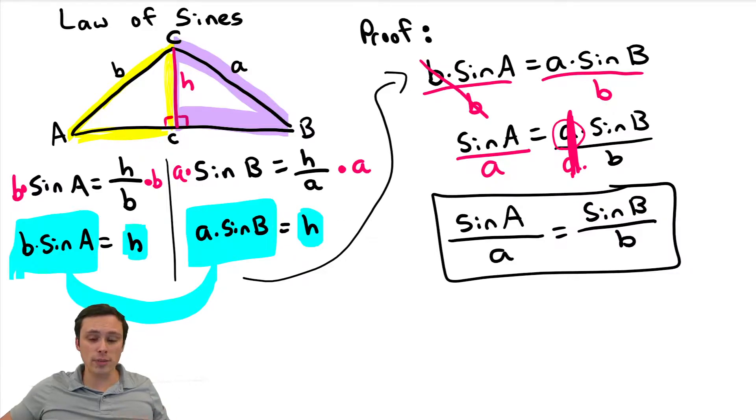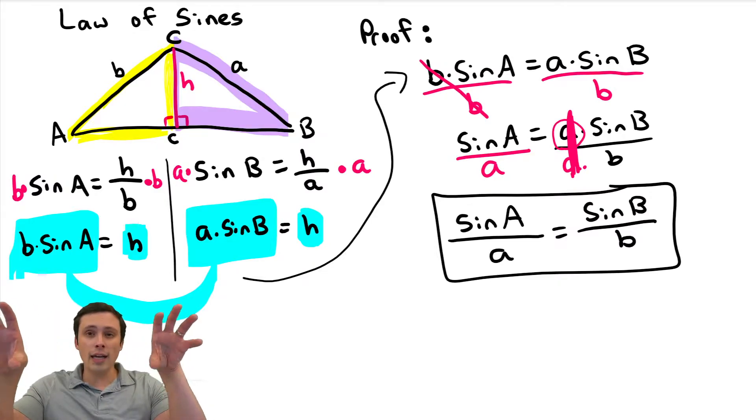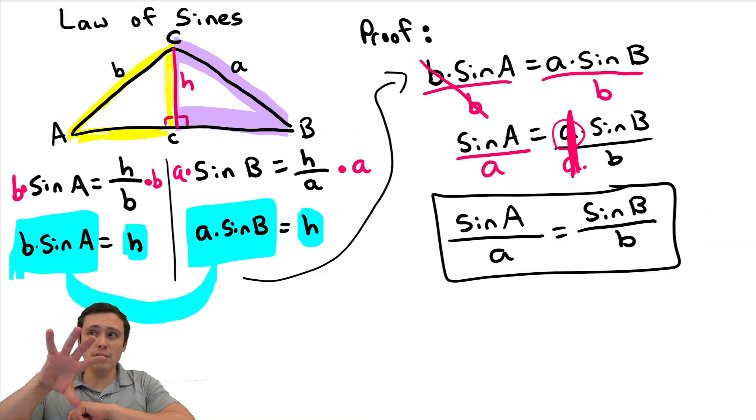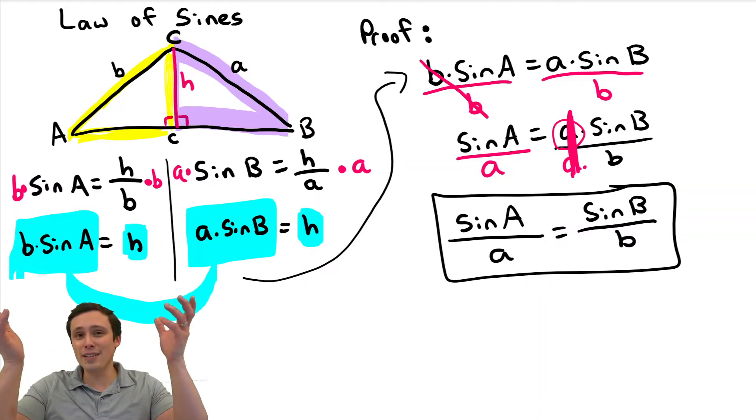Then, to actually use this formula, you would just substitute an angle and its opposite side into each of those fractions and cross multiply. Now, you might be wondering, well, would this also equal sine C over C? Yes, the proof would be identical. Just imagine, you could rotate the triangle around a little bit, but this is good enough for what we're doing here.